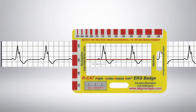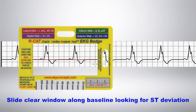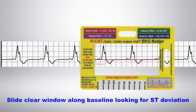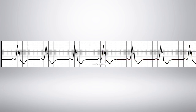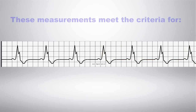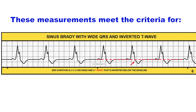Then, turn the EKG badge over and slide the clear window with the red baseline on the EKG to look for ST deviation. All these measurements meet the criteria for sinus brady with a wide QRS and inverted T wave.